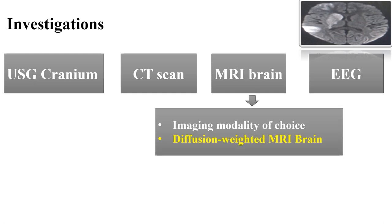MRI brain is the imaging modality of choice for cerebral palsy. It is indicated to determine the location and extent of structural lesions. In the brain stem and basal ganglia, in the first 24 hours of life, diffusion-weighted MRI is very sensitive and can detect injury to the brain at this time when T1 and T2 weighted MRI imaging will be normal.